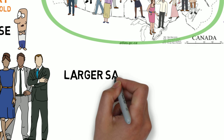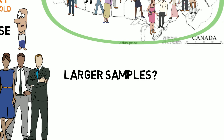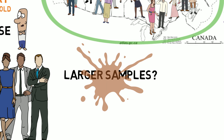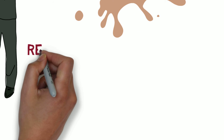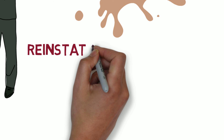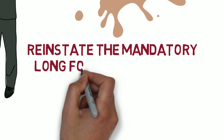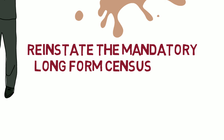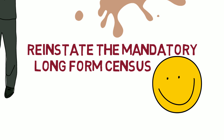Increasing the sample size will not fix the fact that we are sampling from a systematically different population. If there is systematic bias in the response rates across groups in Canadian society, then the claim that the accuracy of a voluntary survey is preserved by sampling more households is wrong. The census is a vital, even pivotal, component of our statistical infrastructure. Economists generally agree there are important benefits to reinstating the mandatory long-form census.